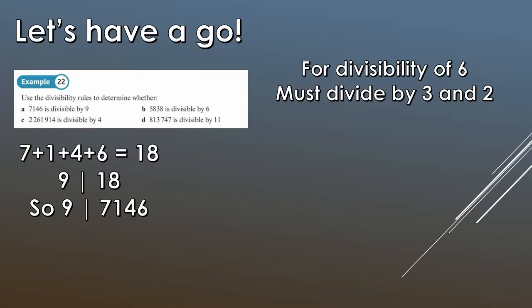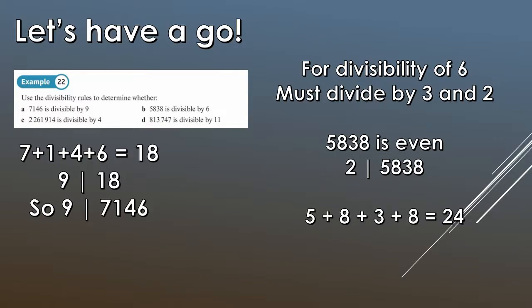For divisibility of 6, it must divide by 3 and 2. Well, 5838 is even, so 2 does divide it. We can show that straight away. For 3, remember, very similar to 9, we just got to add up the digits. So if you add them all up, you get 24. Does 3 divide 24? Yeah, of course it does. 8 times 3 gives us 24. So 6 does divide 5838. So we've shown both rules individually there.